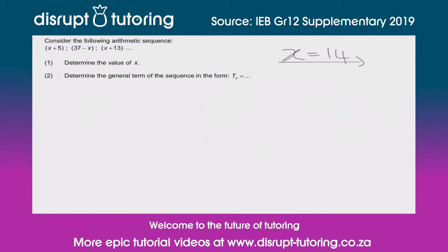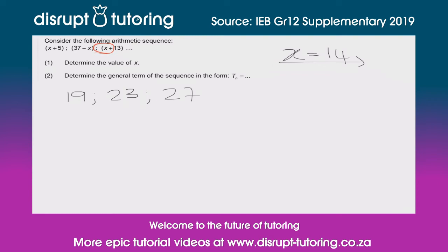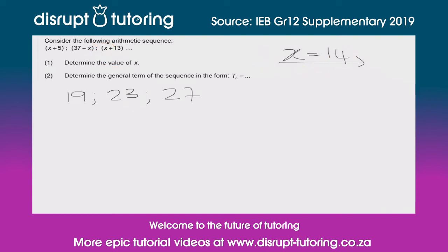The first thing we should do is generate our sequence by substituting x equals 14 back in. That gives us x plus 5 equals 19, then 37 minus 14 equals 23, and then x plus 13 gives us 27. So our arithmetic sequence is 19, 23, 27.